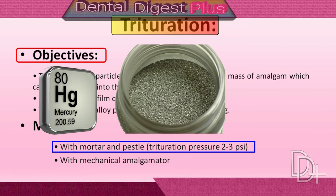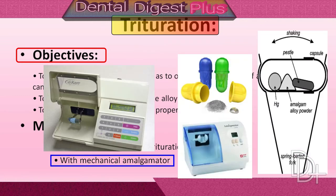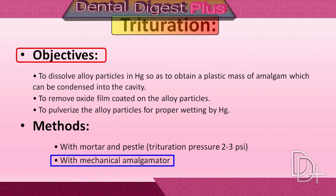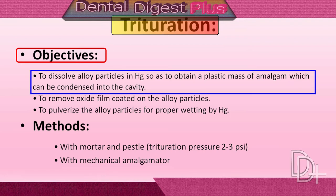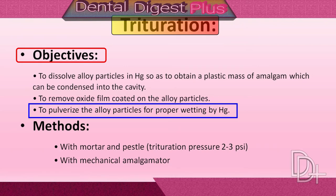Originally, the alloy and mercury were mixed and triturated by hand with a mortar and pestle. Mechanical amalgamation saves time and standardizes the procedure. The objectives of trituration are: to dissolve alloy particles in mercury so as to obtain a plastic mass of amalgam which can be condensed into the prepared cavity; to remove the oxide film coated on the alloy particles; and to pulverize the alloy particles for proper wetting by mercury.